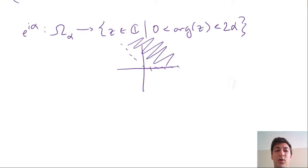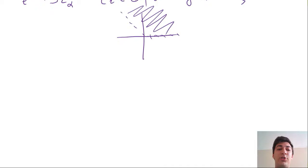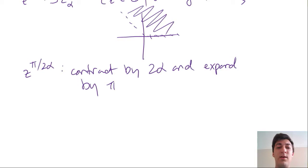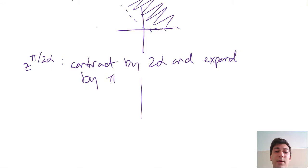We said that this z to the beta map is going to be what we want, but we want to make sure that we're fanning it out the right amount. It turns out that if we fan it out by pi over 2 alpha, this means basically contract by 2 alpha and expand by pi. So in a heuristic sense, we've just come across the perfect conformal map to get it so that now this region I've drawn above is actually just going to be the whole upper half plane, and we don't include that real axis.